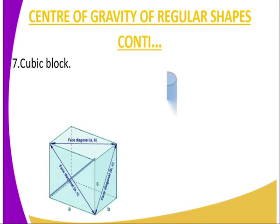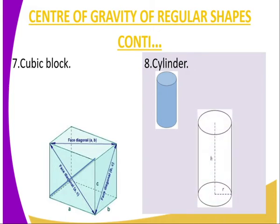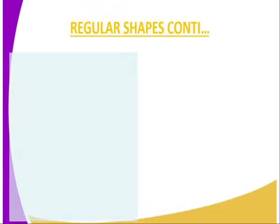For a cylindrical shape, you find the center of gravity by constructing the vertical and horizontal axes. The midpoint of the point of intersection of these axes gives the center of gravity.